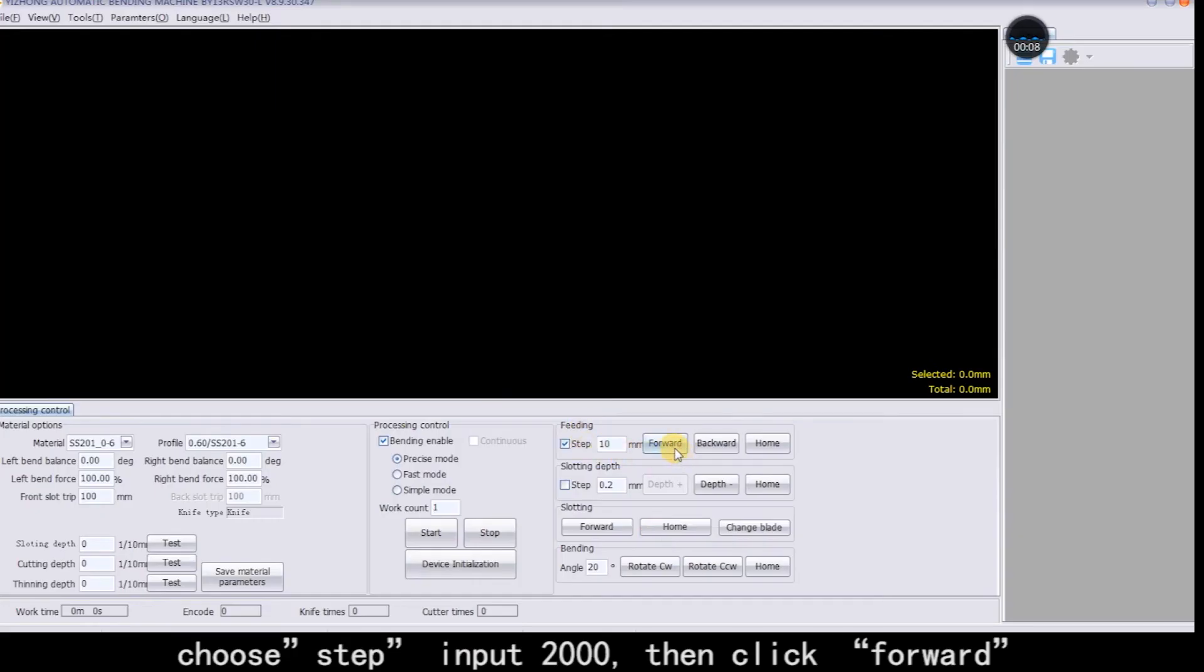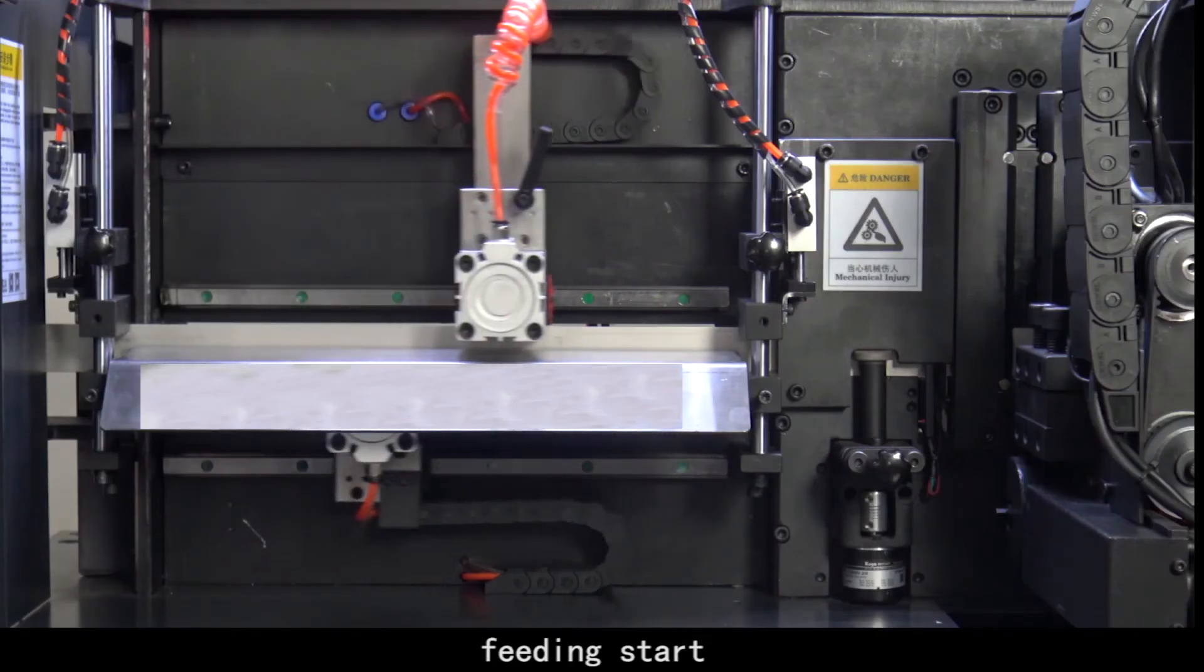Choose step input 2000, then click forward. Feeding start.